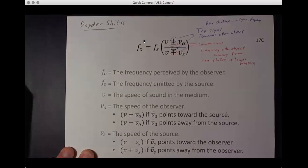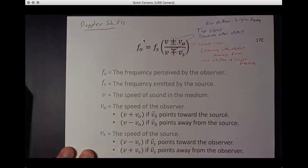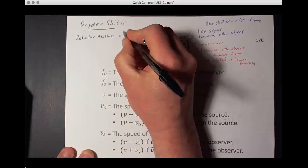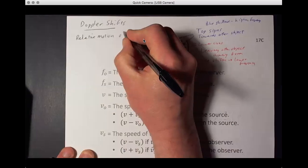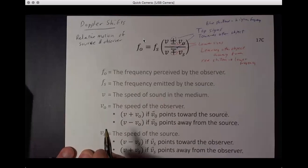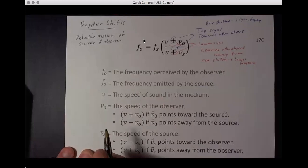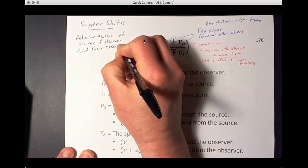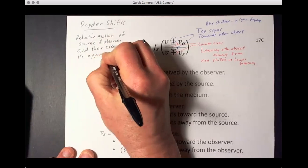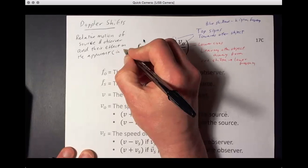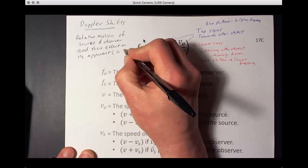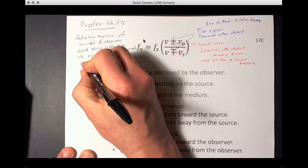I guess it's time to start Unit 17C as part of our Physics 211 course and today's lecture is about Doppler shifts. Our Doppler shift comes from really the relative motion of the source and observer.